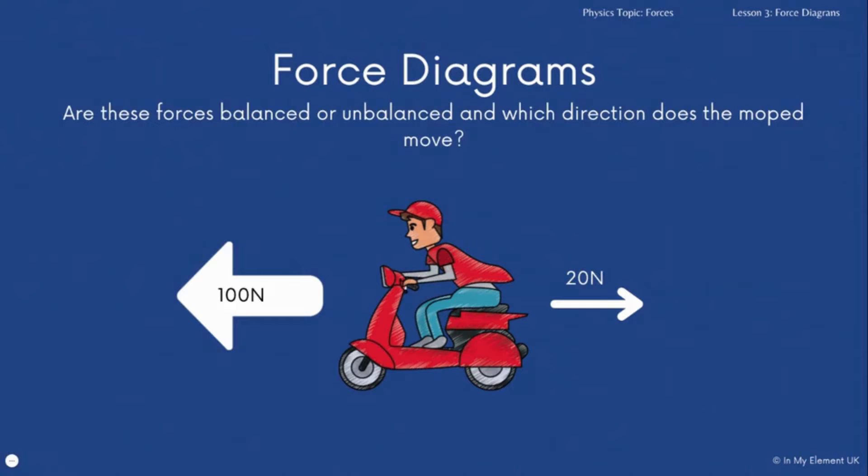So on this picture of the chap on the moped, the forward force is 100 newtons but the backward force is 20 newtons. So overall the force is unbalanced and there is an acceleration so that moped will move forward.